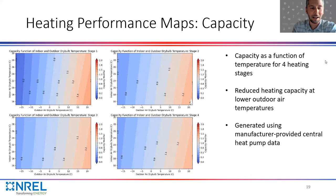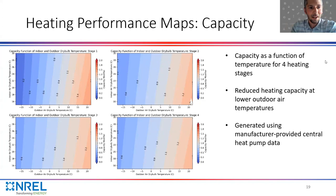Similarly, we have capacity reduction as a function of temperature. These can be read as reduction factors — for example, 0.8 means your rated capacity at 47°F would be multiplied by 0.8. We see lower available heat pump capacities at lower outdoor air temperatures, as expected. The indoor air dry-bulb temperature has less impact on capacity — you could probably get away with just using outdoor air dry-bulb since there isn't as much variation in that direction.